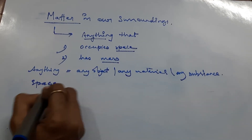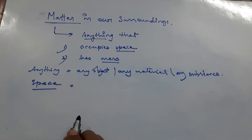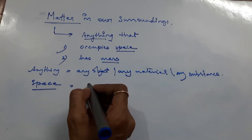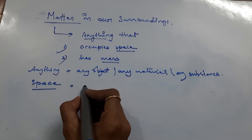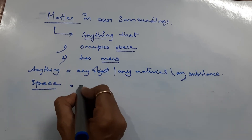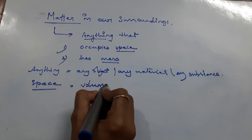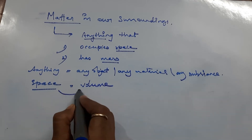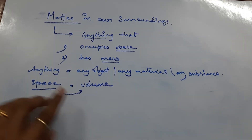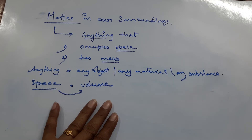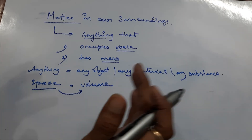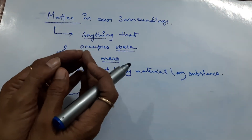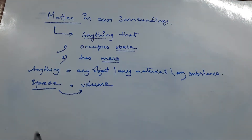Space is what? Whenever we talk about space, it means volume. Now what is volume? Volume is the amount of space occupied by any object. Volume is the capacity of the object.